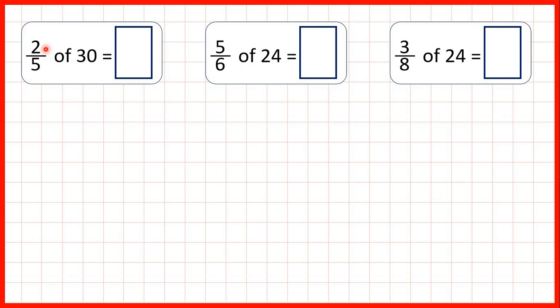But in these fractions the numerator is larger than 1. That means that we can still start by dividing by the denominator, but then we need to take our answer and multiply by the numerator. The way I remember this is: divide denominator, times top.